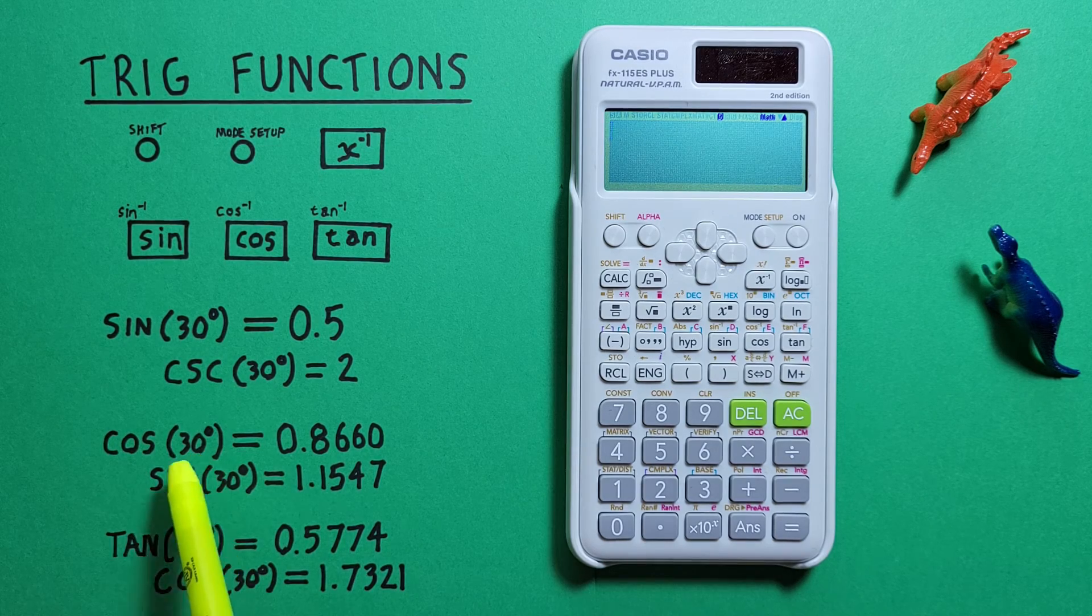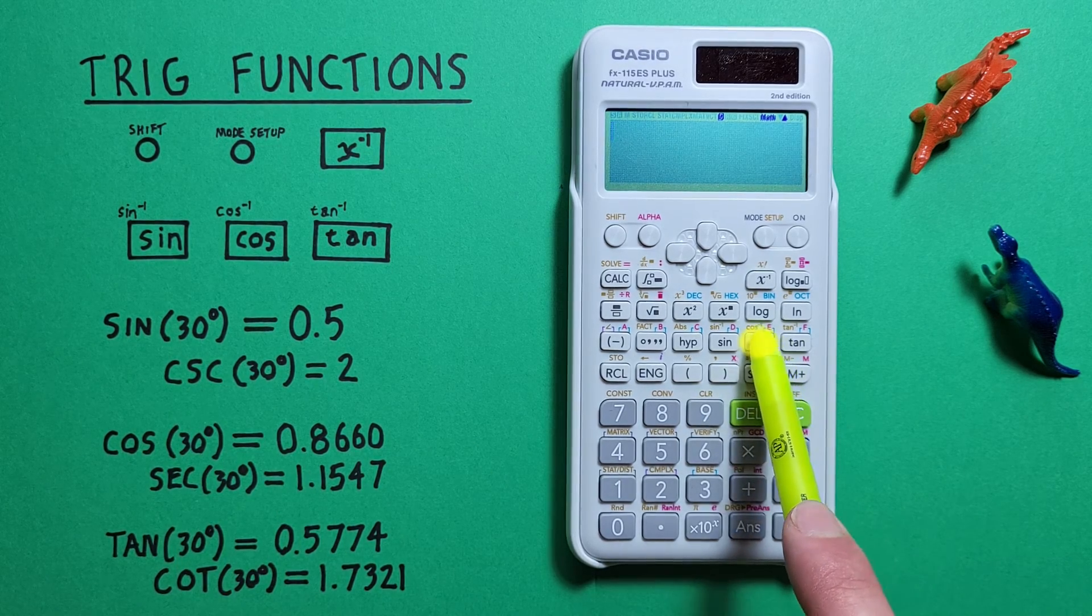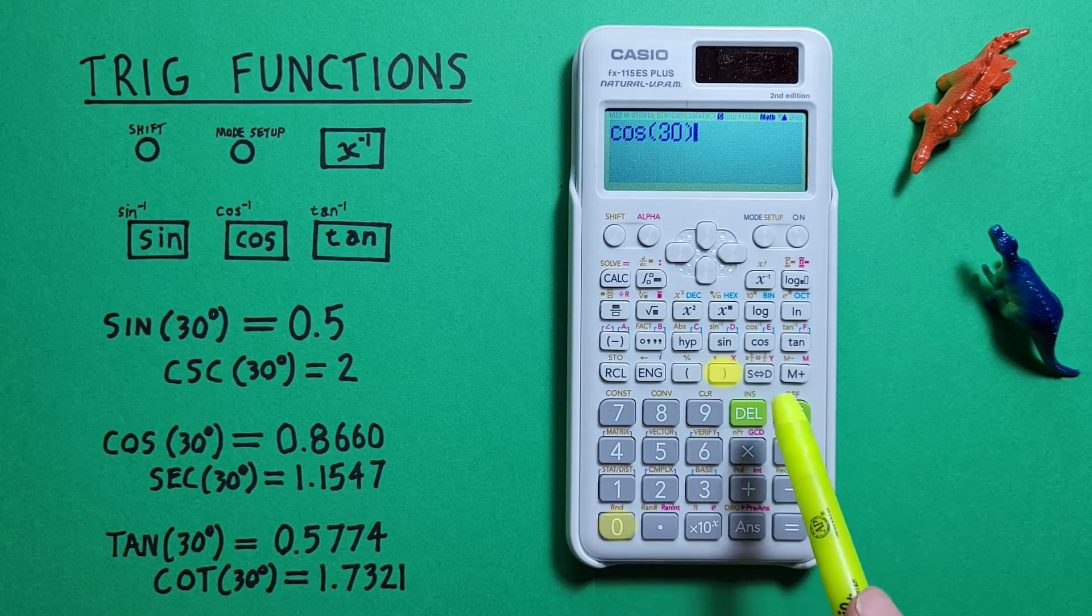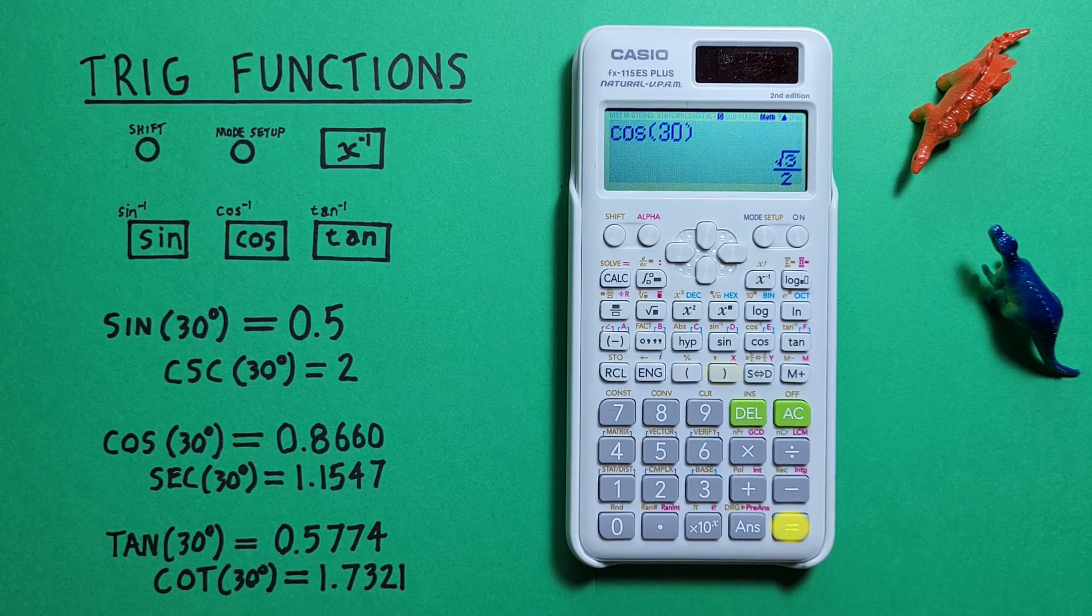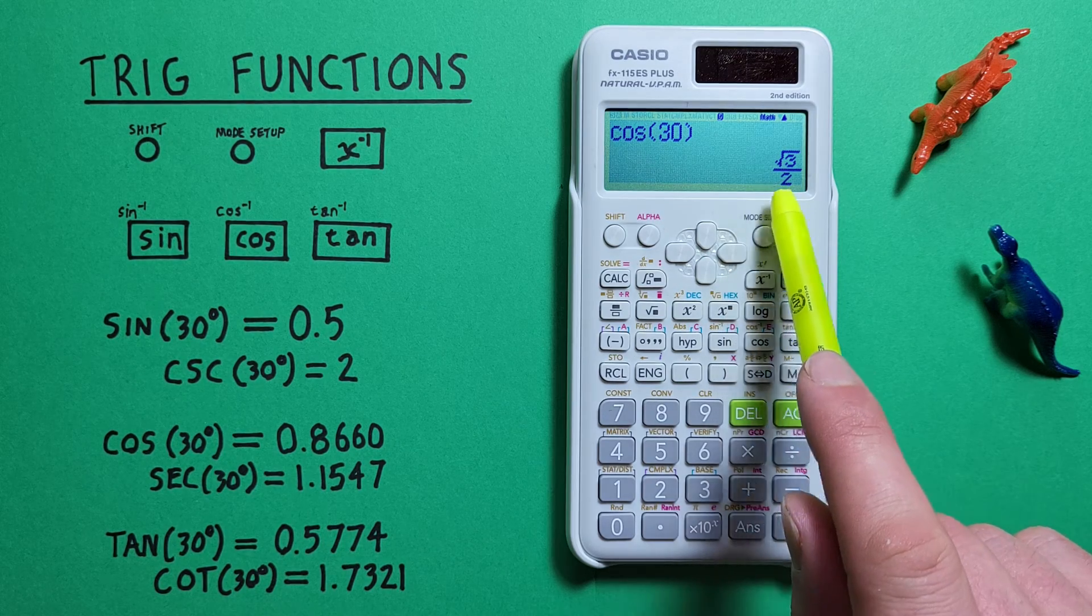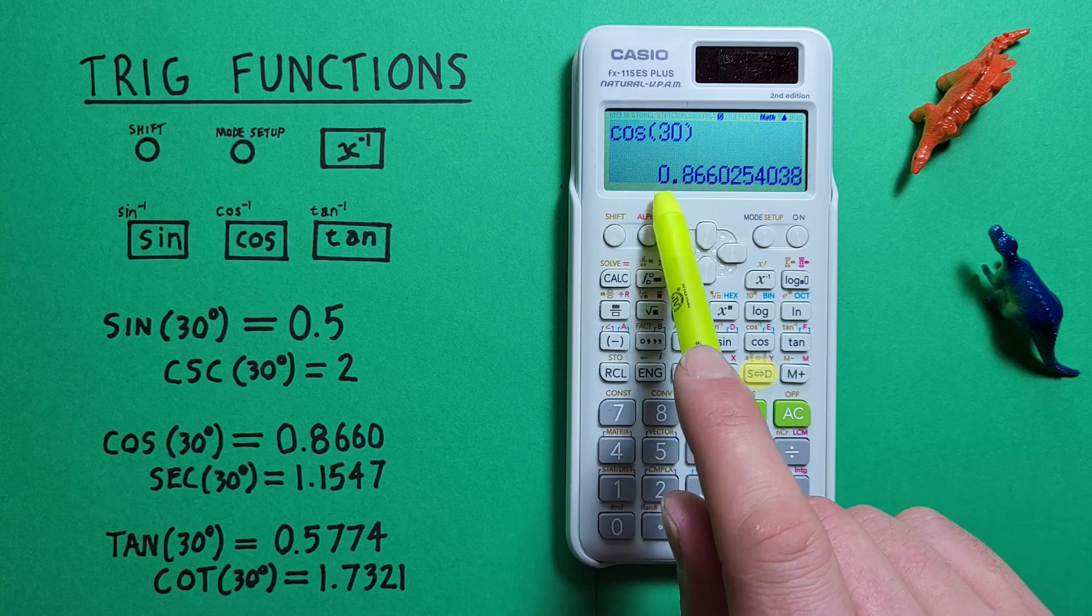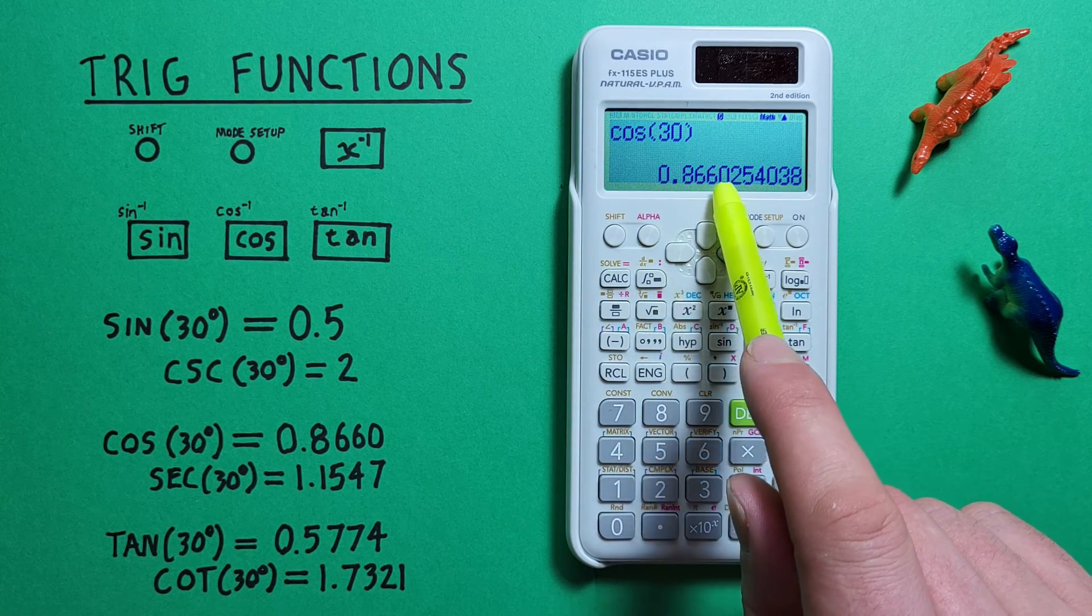For cosine we press cos of 30, close our bracket, and press equals, which also gives us a fraction that can be converted to a decimal of 0.8660, etc.